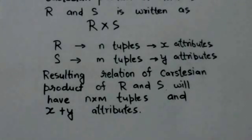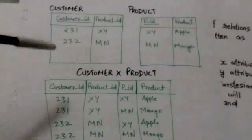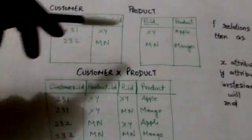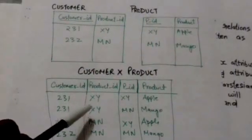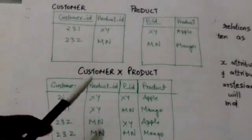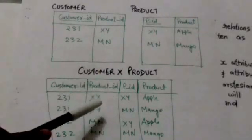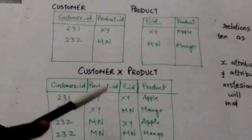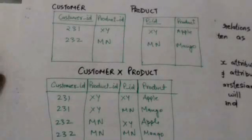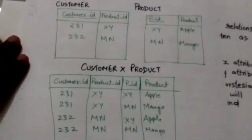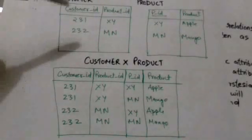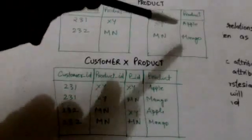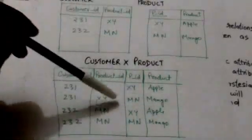For example, this is the customer relation and this is the product relation. This is the resulting relation of the Cartesian product of relations customer and product. Each tuple of the resulting relation is formed by combining the tuple of the customer relation with the tuple of the product relation.